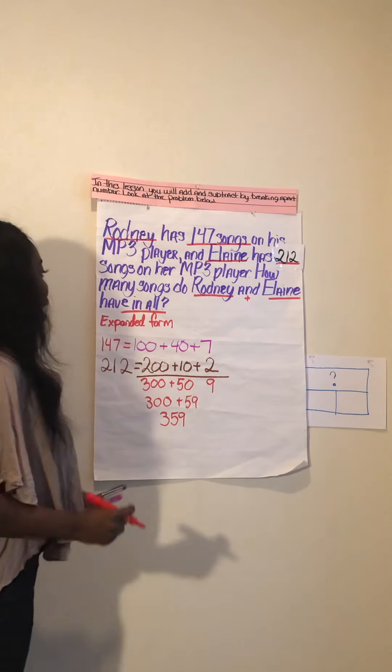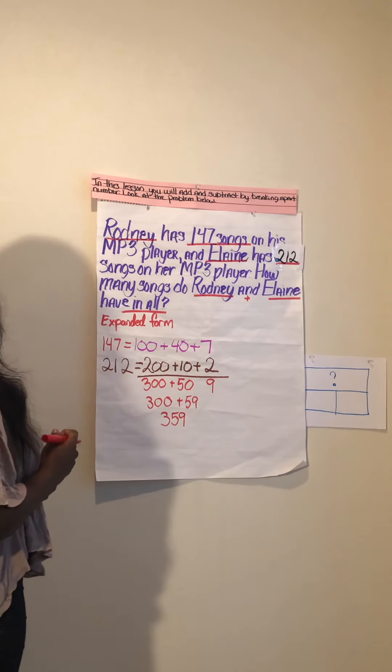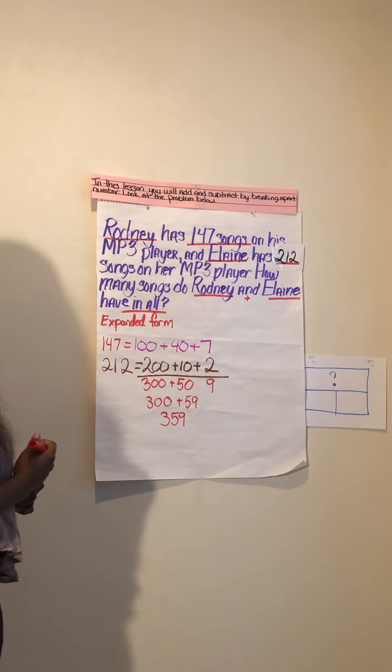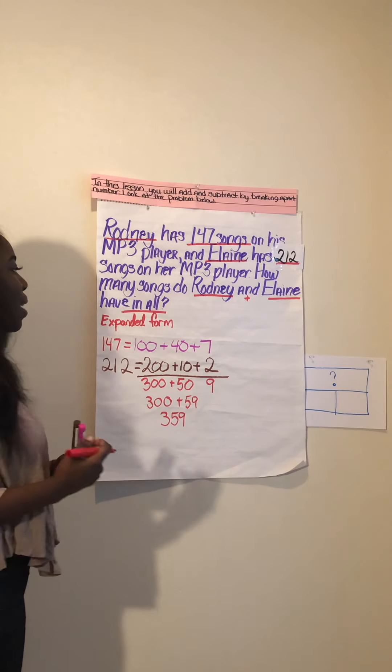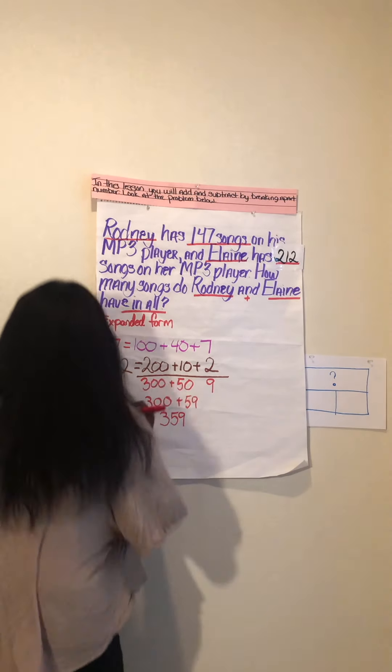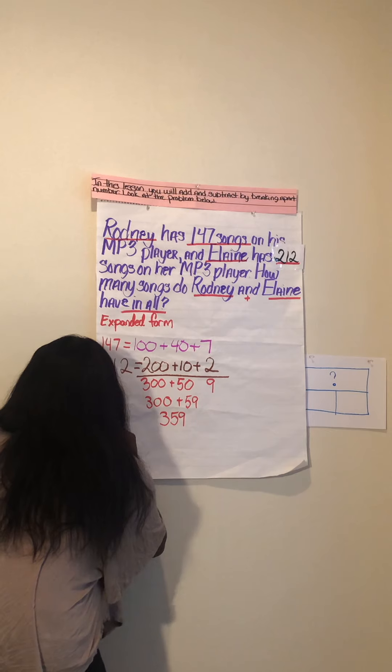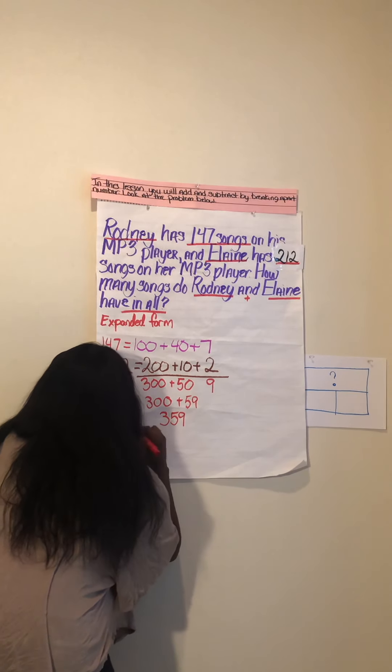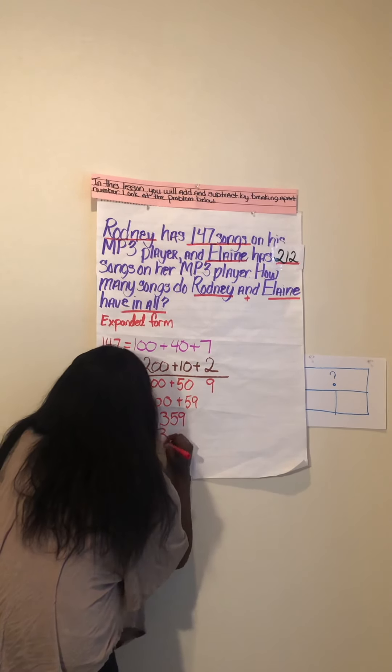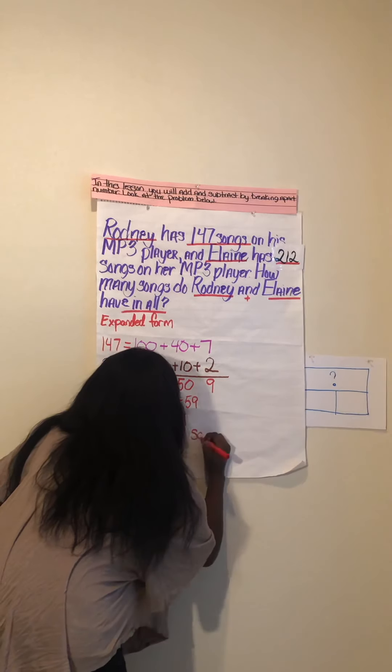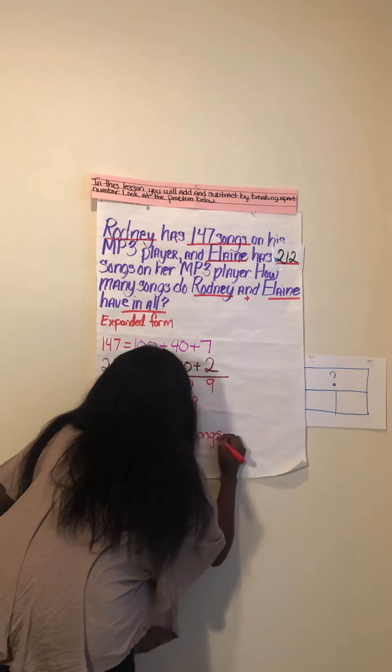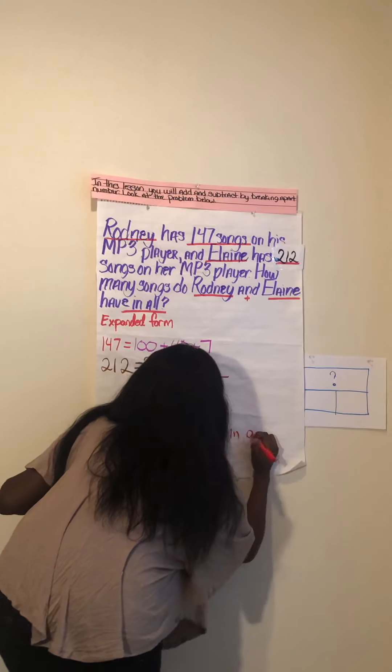So the answer, or how many songs they have in all, is 359. Now we need to write a statement. There are 359 songs in all.